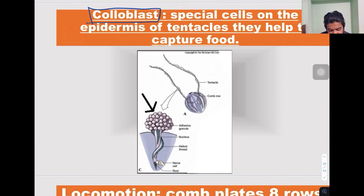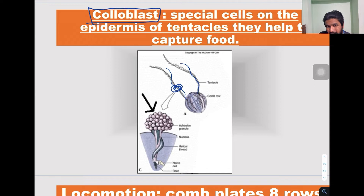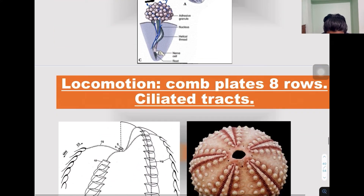They have special cells called colloblasts — this is one of the distinguishing features found only in Ctenophora. Unlike Cnidaria where nematoblasts are present, here colloblasts are present on the tentacles. They help in attracting and capturing prey; they are slightly gummy or adhesive in appearance.